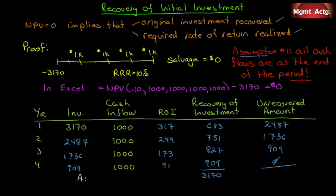Let's show you another assumption. Assumption number two. These are the two big assumptions of net present value. All cash flows can be reinvested at the same required rate of return. In other words, this $317 can be reinvested at 10% for three years. This $249 can be reinvested at 10% for two years. This $173 can be reinvested at 10% for one year. And that will give us a full 10% return.